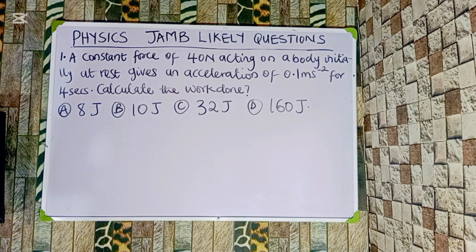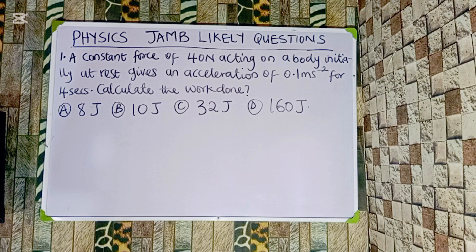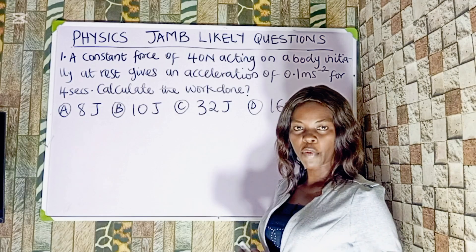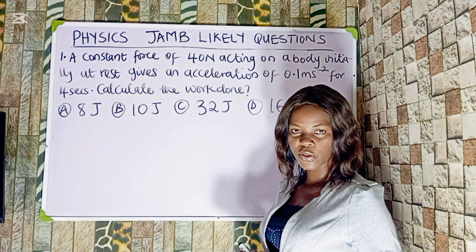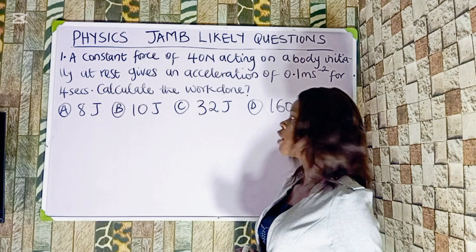A constant force of 40 newtons acting on a body initially at rest gives an acceleration of 0.1 meters per second squared for four seconds. Calculate the work done. Option A: 8 joules, Option B: 10 joules, Option C: 32 joules, Option D: 160 joules.